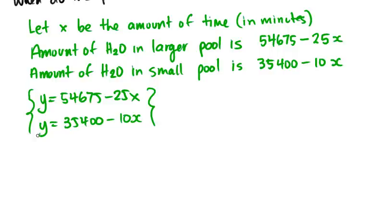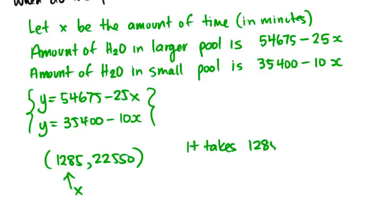We can solve these two equations and find out when they're equal to each other using technology. As you can see on the calculator, the intersection was 1,285 and 22,550. We really only care about the x value because that's the amount of time.